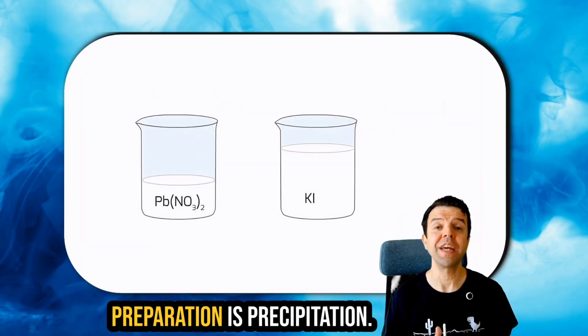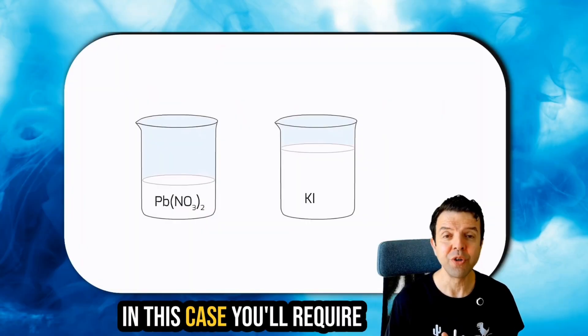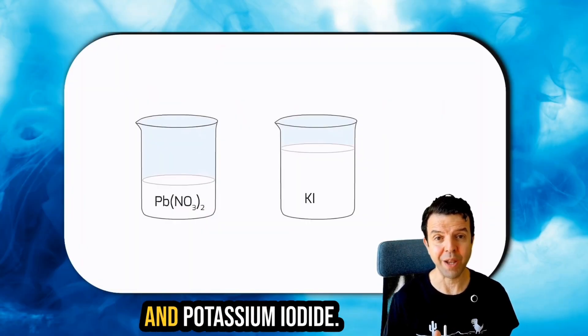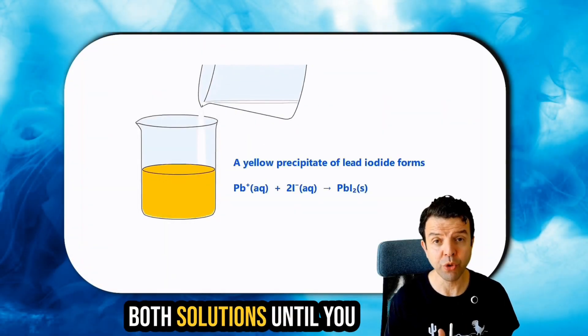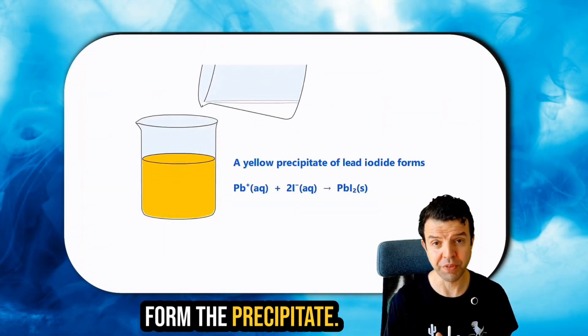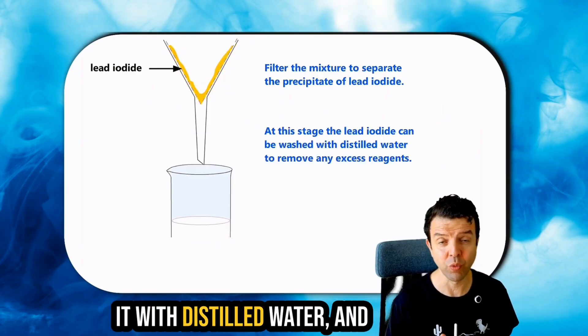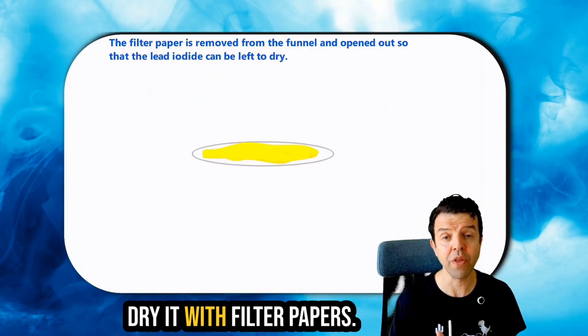The last method for salt preparation is precipitation. In this case, you'll require two soluble salts such as lead nitrate and potassium iodide. In step one, you'll mix both solutions until you form the precipitate. Following this, you'll filter your precipitate and rinse it with distilled water and dry it with filter papers.